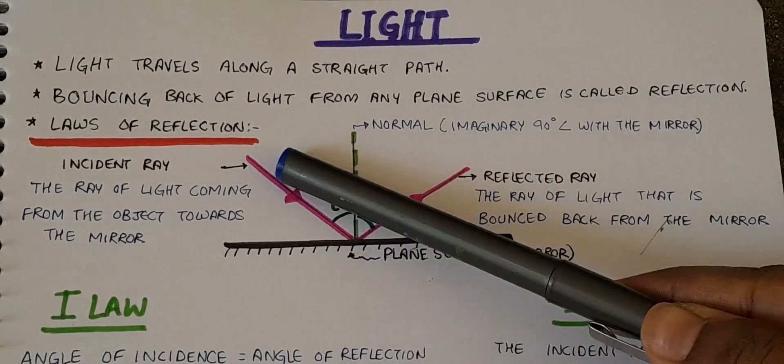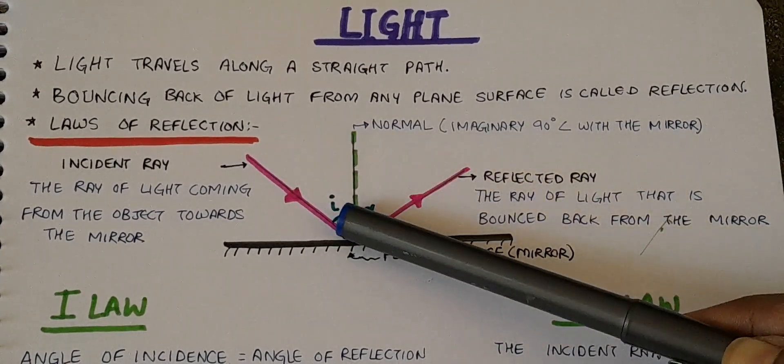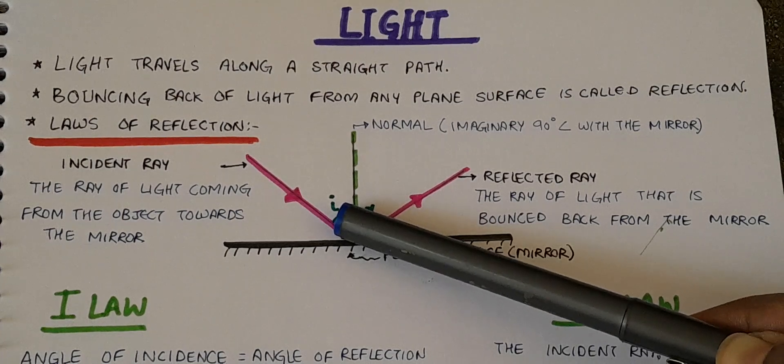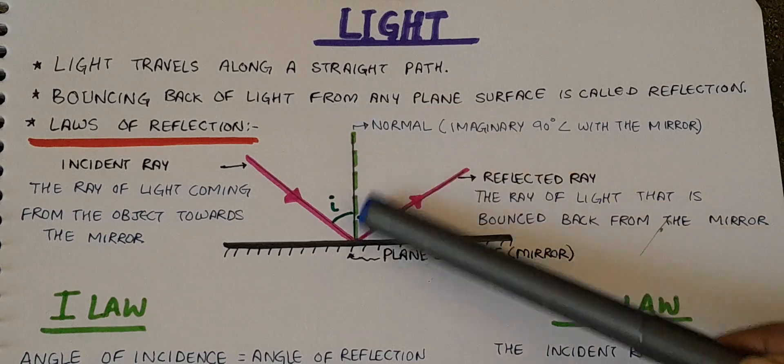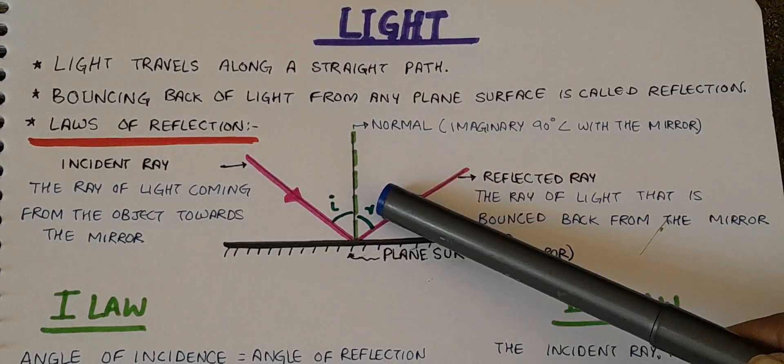The angle between incident ray and normal, this angle, angle I, is called angle of incidence. The angle between reflected ray and the normal, this angle, angle R, is called angle of reflection.